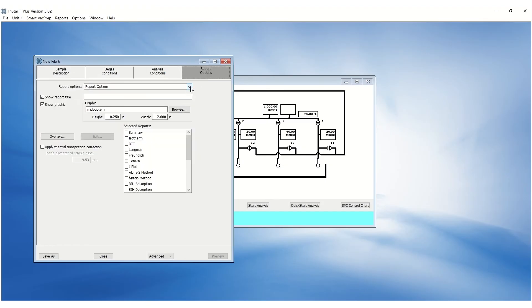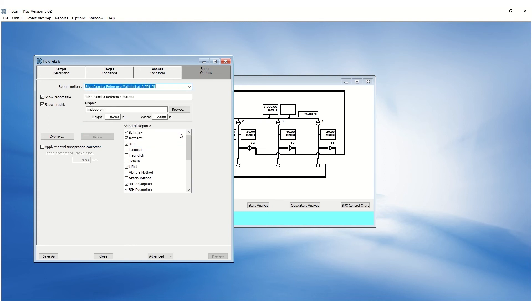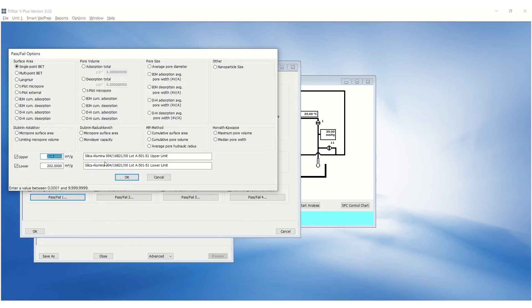Under Report Options, click on the drop-down menu and select Silica Alumina Reference Material. Select Summary and click on Edit. Select the Pass-Fail options. Update the upper and lower limits to the correct specification if needed. Ensure to enter the lot number for future reference.